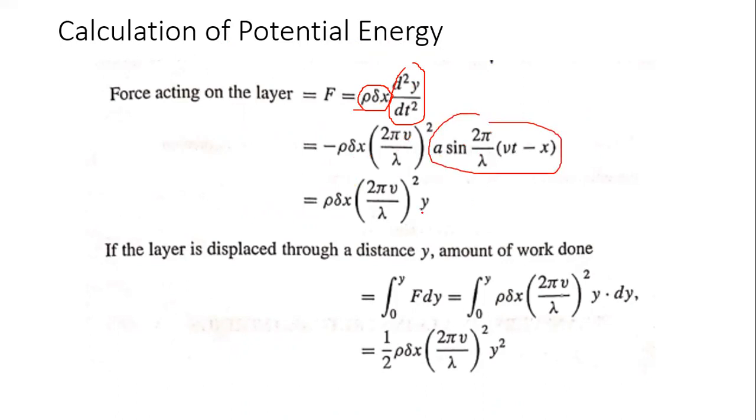So that is replaced with y. F is equal to rho into delta x, 2πv/λ the whole square into y.